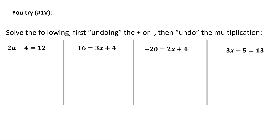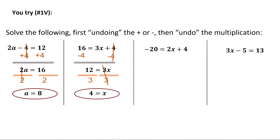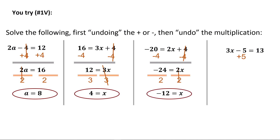Try these four. Here we add 4 to both sides giving 2a equals 16, then divide both sides by 2 giving a equals 8. In the second, subtract 4 from both sides giving 12 equals 3x, then divide by 3 giving 4 equals x. In the third, subtract 4 giving negative 24 equals 2x, then divide by 2 giving negative 12 as the final value of x. In the last, add 5 to both sides giving 3x equals 18, then divide by 3 giving x equals 6.